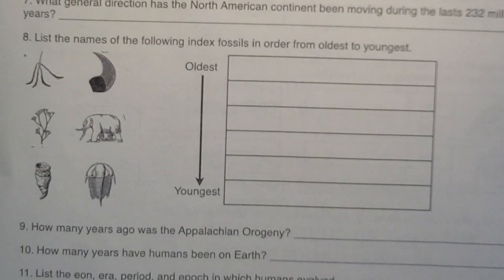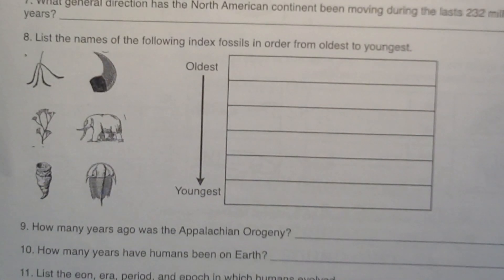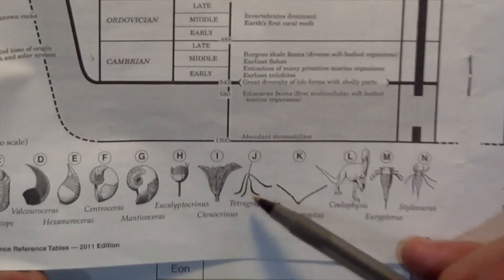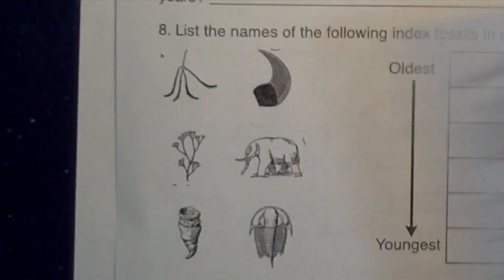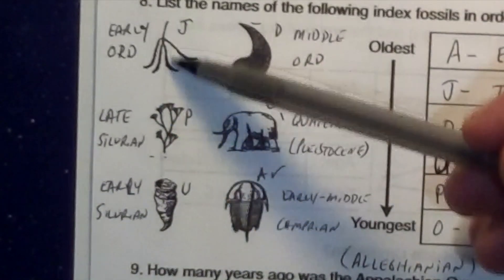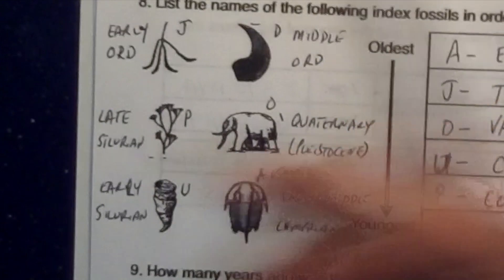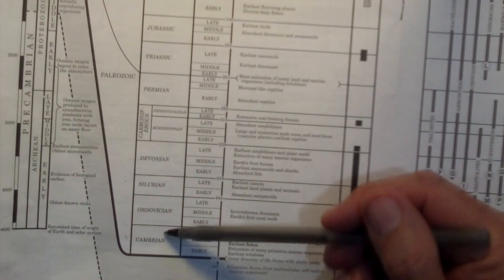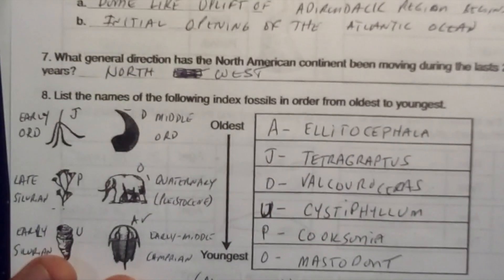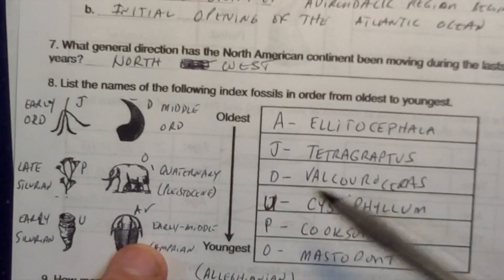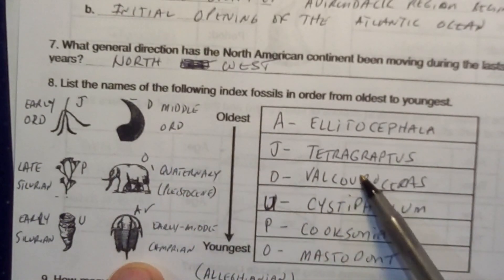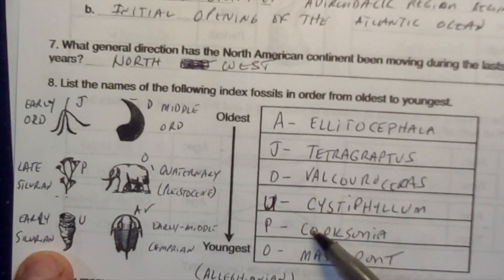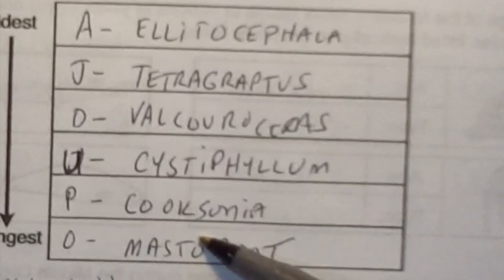Number eight: list the index fossils from oldest to youngest. I went through and found the letter of each organism and when it occurred. Placing them from oldest to youngest: letter A — Early to Middle Cambrian, the oldest; letter J — Early Ordovician; letter D — Middle Ordovician; letter U — Early Silurian; letter P — Late Silurian; and finally letter O — which goes along with the Quaternary.